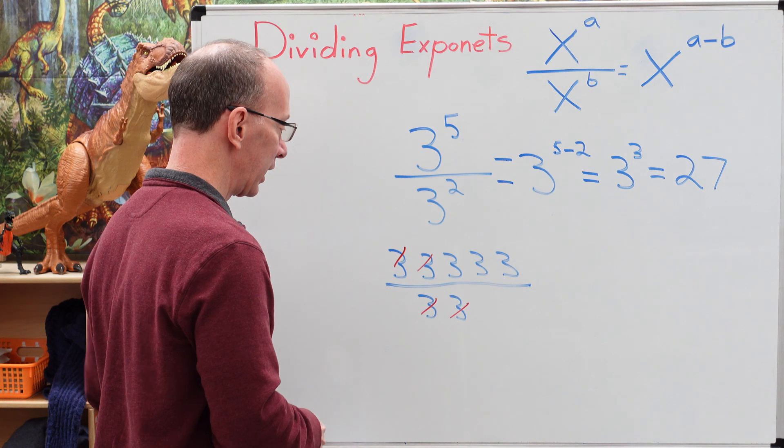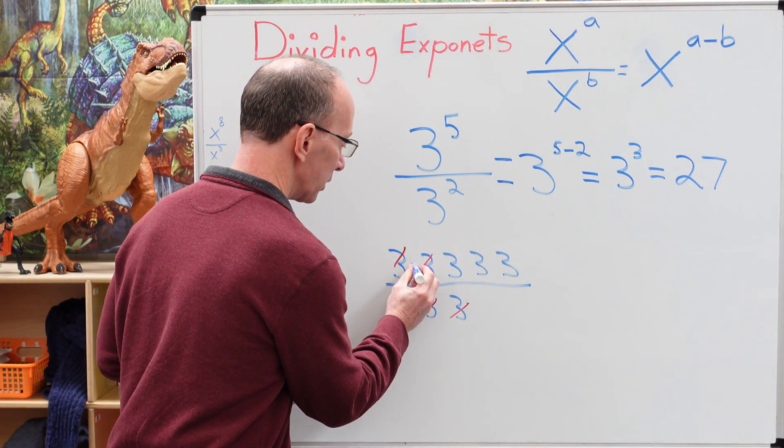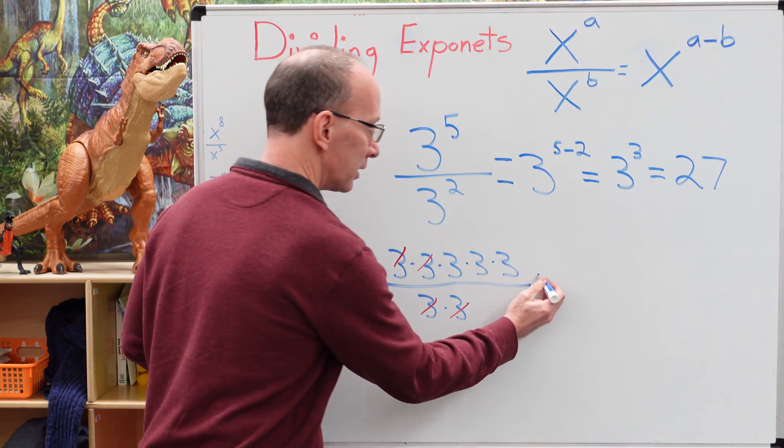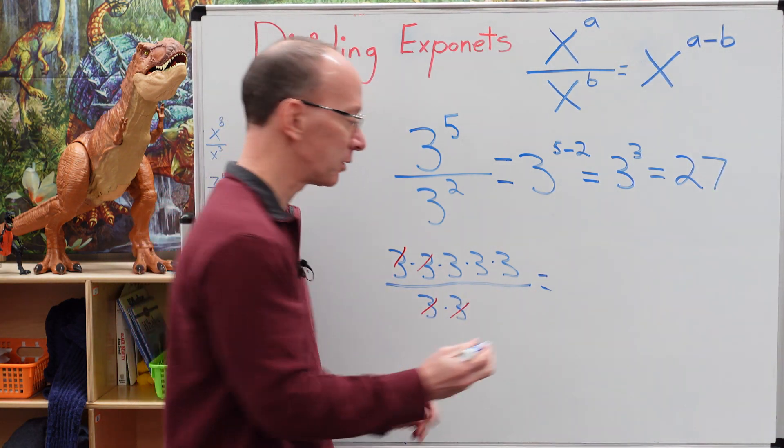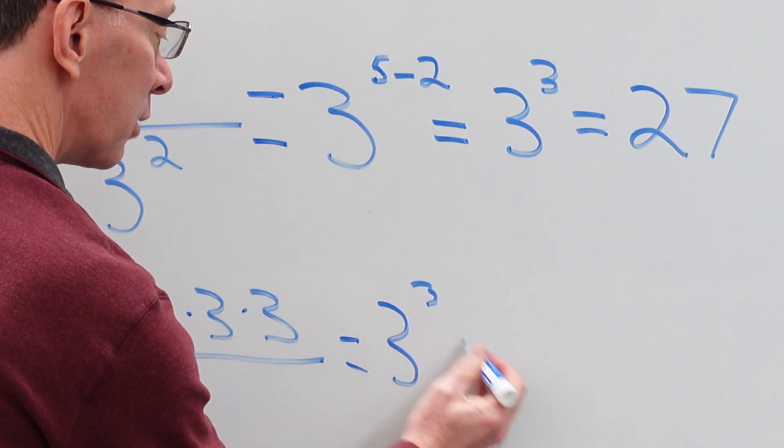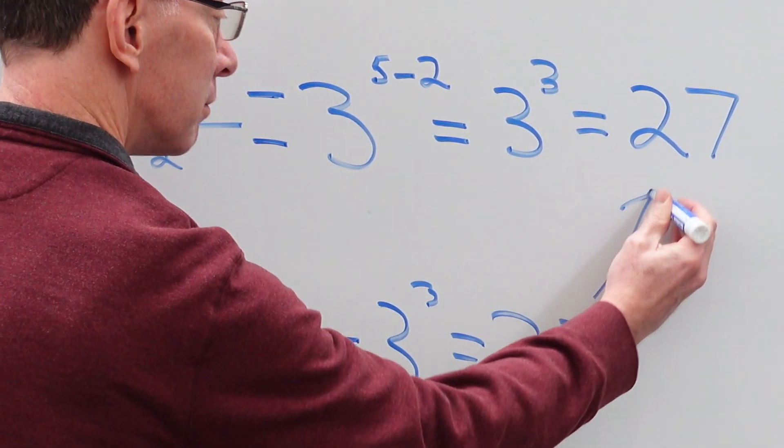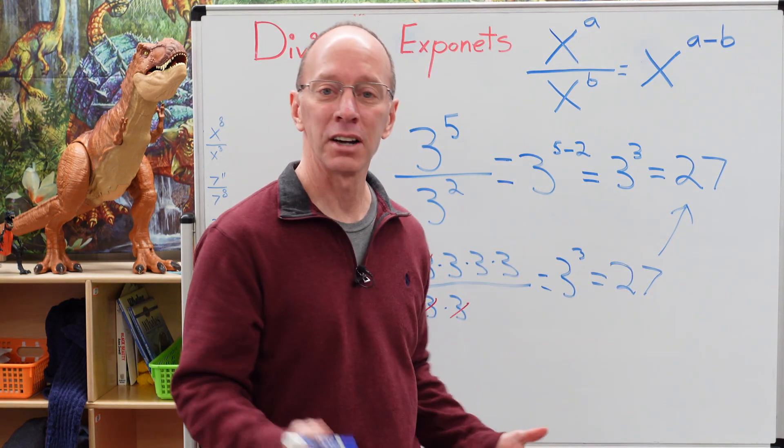So then I have, I'm going to put little multiplication symbols in there. So then this would be 3, 3s, which would look like this, 3 to the third power, which would equal 27. So both of these answers are the same.